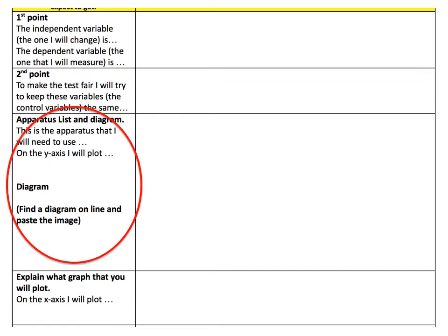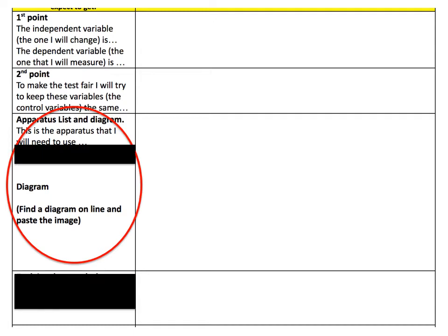The next part of your sheet is an apparatus list and diagram. You can use the information you've learnt from the video, and there is a slide later on in this presentation that will help you make an equipment list and draw diagrams of the equipment you will need. I've blacked out the bits about graphs because this is a food test experiment — you can't draw a graph from the food test experiment.